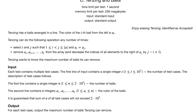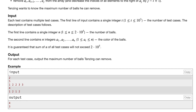Codeforces round 5, problem C: tensing and balls. In this problem, we have n balls in a line. For any pair of balls that are of the same color, we can remove an array of balls that includes those two balls and every ball in between. For each test case, which consists of an integer n and n integers representing the color of the balls, we have to output the maximum number of balls tensing can remove.